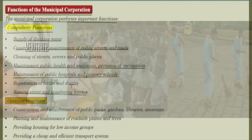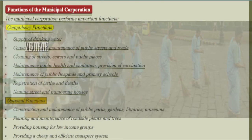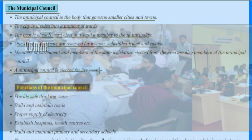Other compulsory functions include maintenance of primary schools, registration of births and deaths, and naming and numbering of streets. Optional functions include construction and maintenance of public parks, gardens, libraries, and museums; planting and maintenance of roadside plants and trees; providing housing loans for low-income groups; and providing a cheap and efficient transport system. In this image we see a municipality-maintained park and a vaccination program managed by local municipalities.